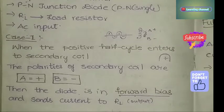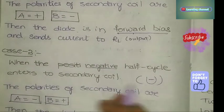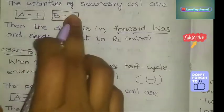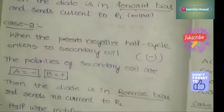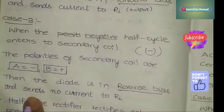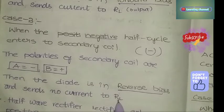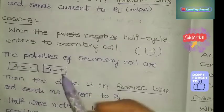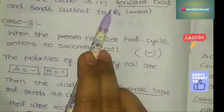Working — Case 2: When negative half cycles enter the secondary coil, the polarities reverse — terminal A becomes negative and terminal B becomes positive. Then the diode is in reverse bias. In reverse bias, no current flows to the load resistor, and there is no output. Therefore, only positive half cycles appear in the output.